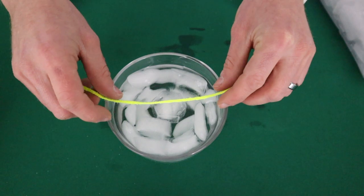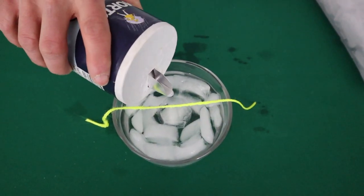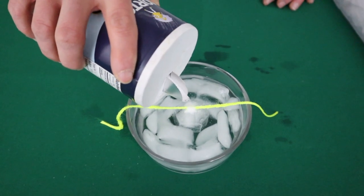All right, so we're going to place our string on top of our ice cube right there. We'll pour a little bit of salt on top and now we're going to give it 30 to 60 seconds to see if we can pick up that ice cube.